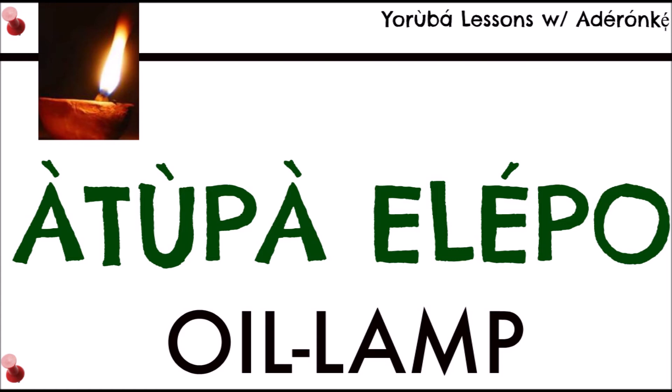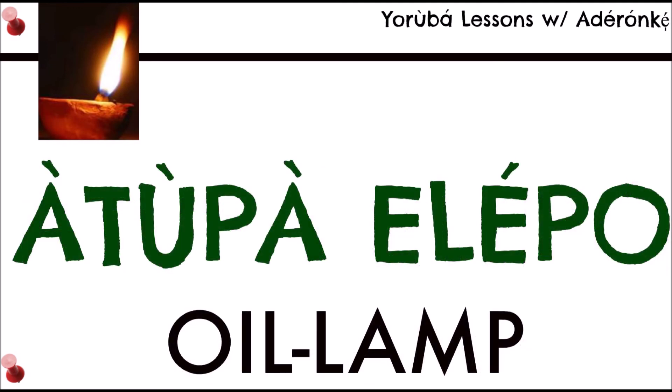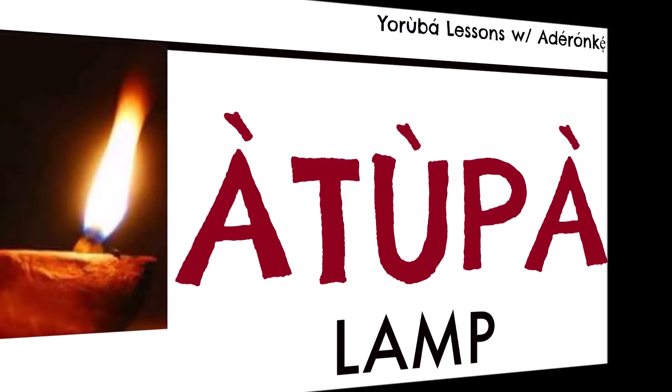Later, they started making the ones you can see in this image — the oil lamps placed in a calabash. Those are called 'àtùkpàelépo.' 'Ekpo' can mean petrol or oil. They usually used palm kernel oil — 'ekpo ekuro' — to keep the fire burning, and those lamps would be àtùkpàelépo.